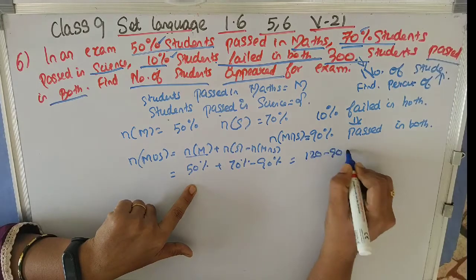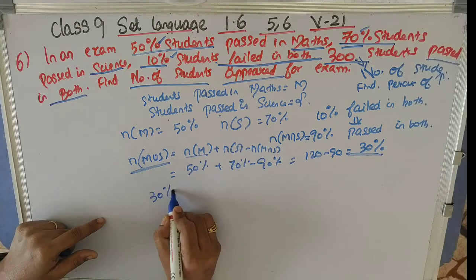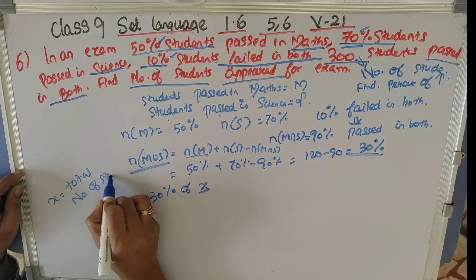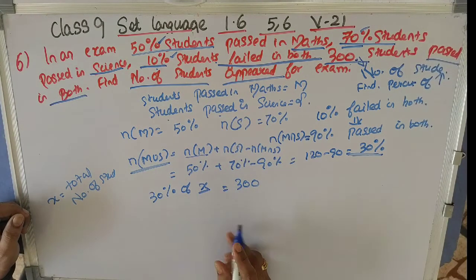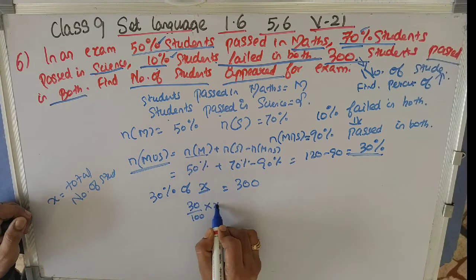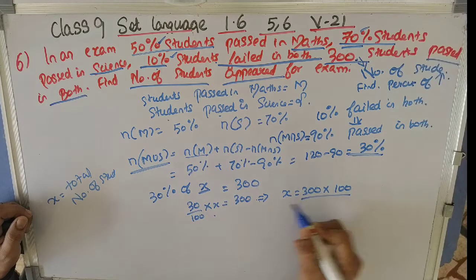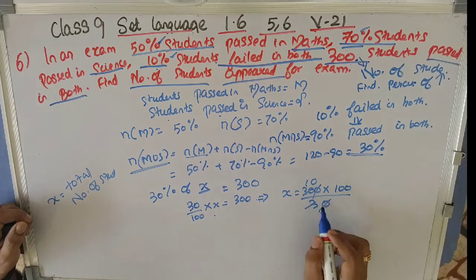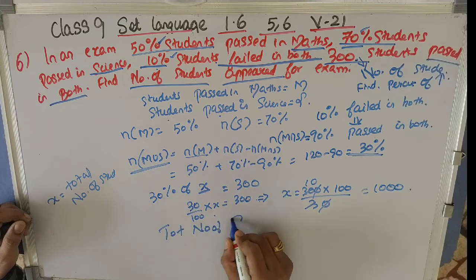So 30% of X equals 300, where X is the total number of students. That means 30 divided by 100 multiplied by X equals 300. Rearranging, X equals 300 multiplied by 100 divided by 30. Dividing 300 by 30 gives 10, so X equals 10 into 100 which is 1000. Therefore, the total number of students who appeared for the exam is 1000.